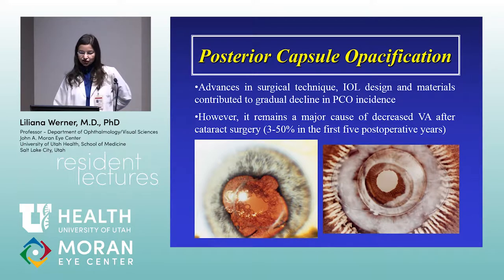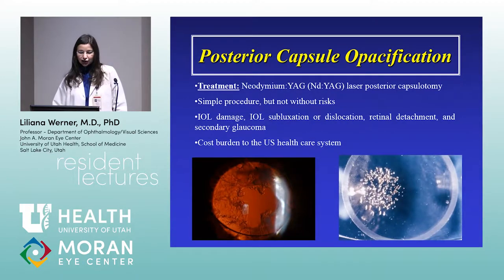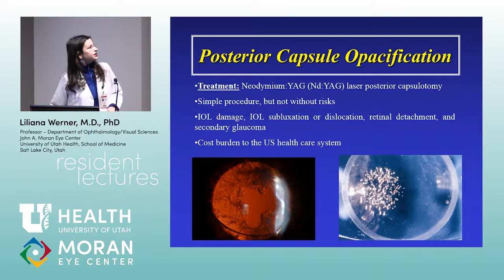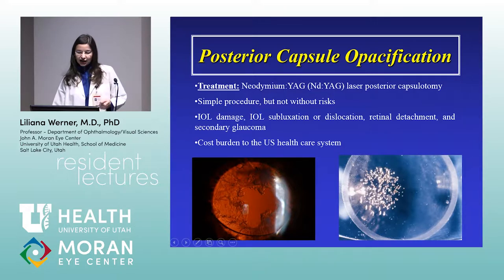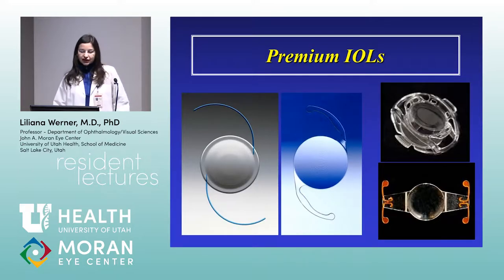There are many advances in surgical technique, IOL design, and materials that have helped decrease the incidence of posterior capsular opacification, but it remains a major cause of decreased visual acuity after cataract surgery — going up to 50% depending on the time frame considered. You can treat it with YAG laser posterior capsulotomy, which is relatively simple, but not without risks: IOL damage with pitting, subluxation, dislocation, retinal detachment, secondary glaucoma, and significant healthcare costs.